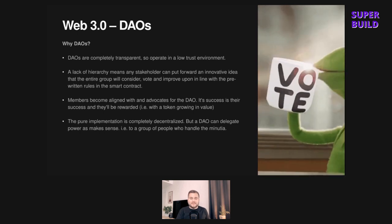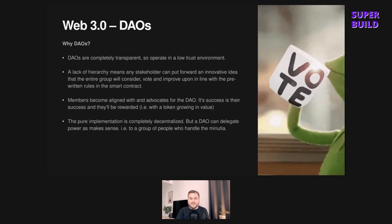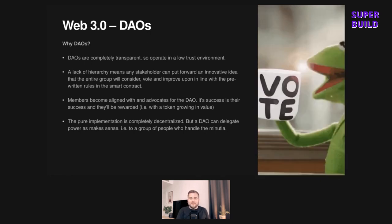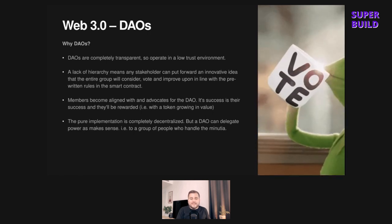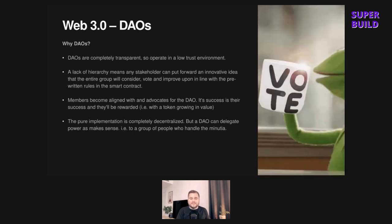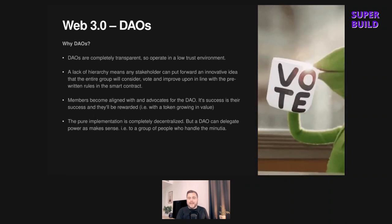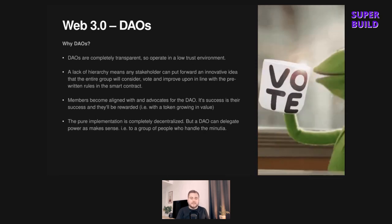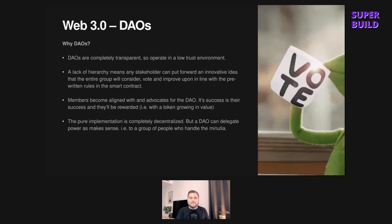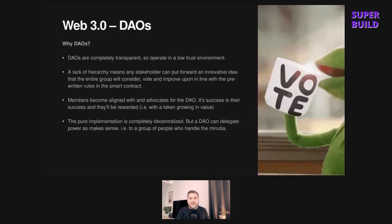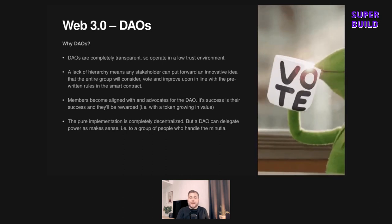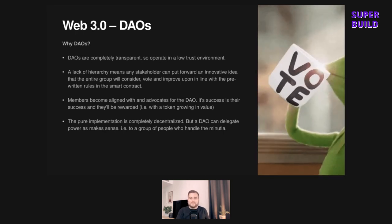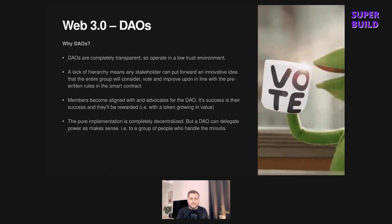Do members want to vote on every single issue? Probably not. Once an organization grows to a decent size, there are just too many decisions to make and voting on every single one would become a massive bottleneck. A DAO can delegate authority in a similar way to shareholders delegating to a board or CEO in a traditional organization — with the key difference being full transparency of decisions and all the checks and balances in place because everything sits on the blockchain, so you can follow the money.